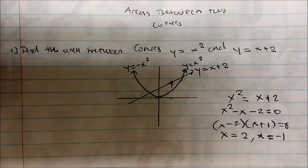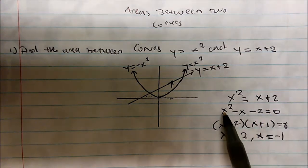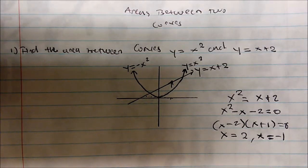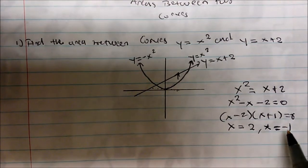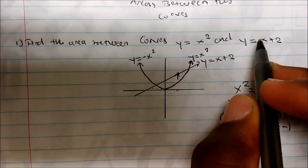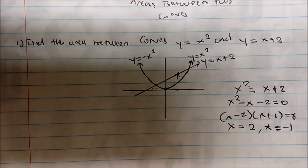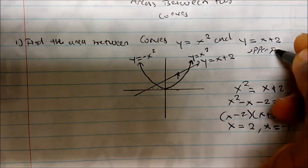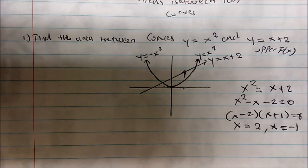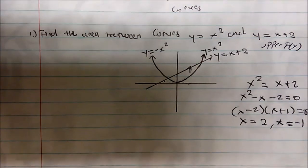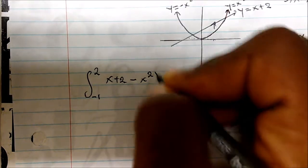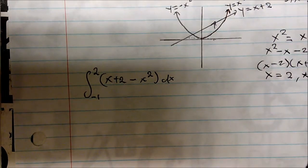If you don't want to draw the picture, once you have your limits of integration you can pick any point between them and plug it into both functions to see which gives the higher value. Zero is between −1 and 2: plugging zero into x² gives 0, and into x + 2 gives 2. So x + 2 is the upper function. The integral becomes the integral from −1 to 2 of (x + 2) minus x² dx.